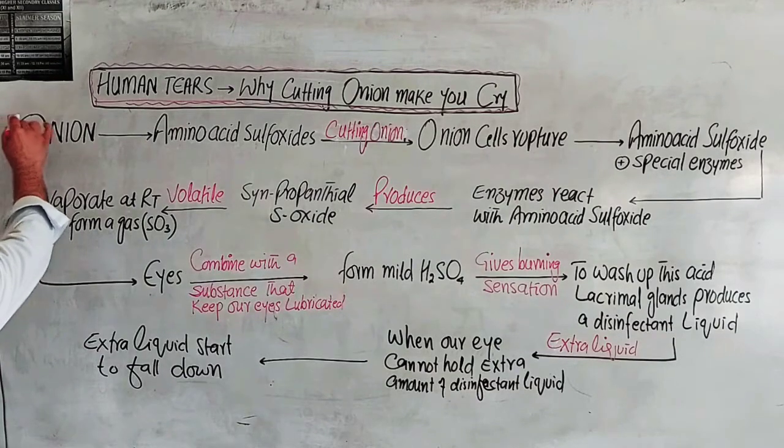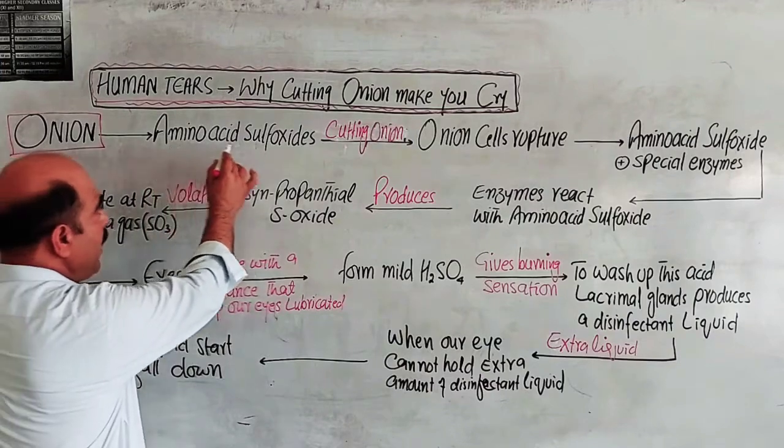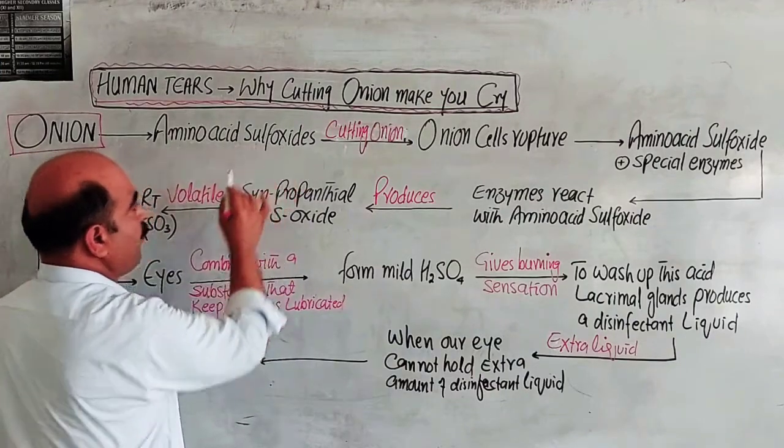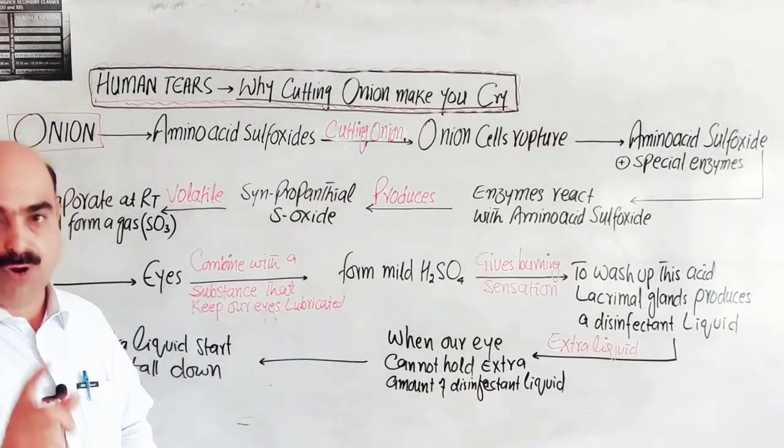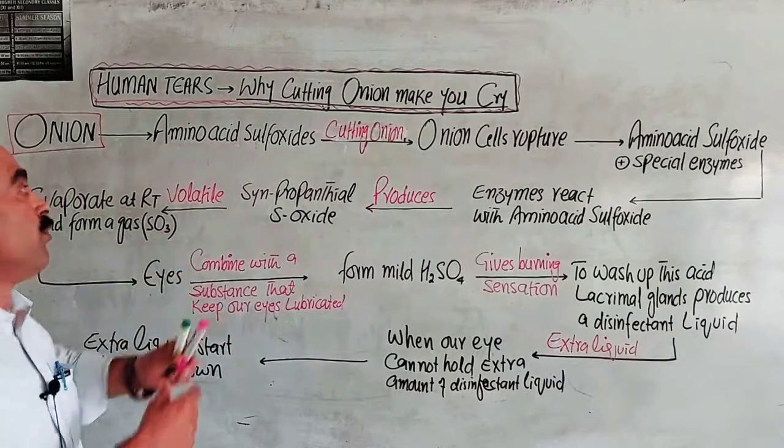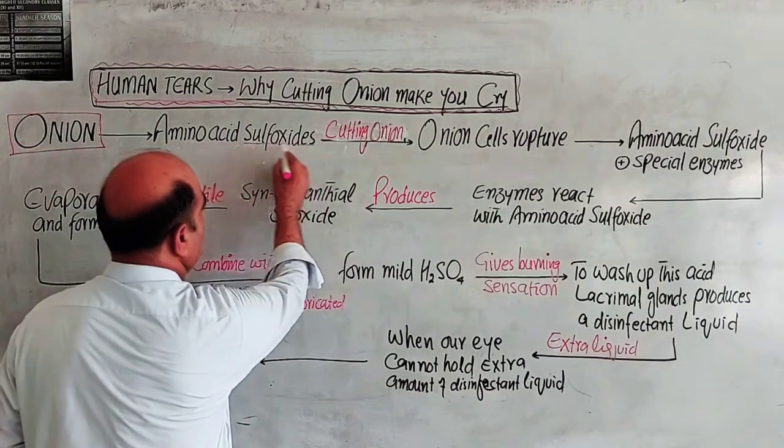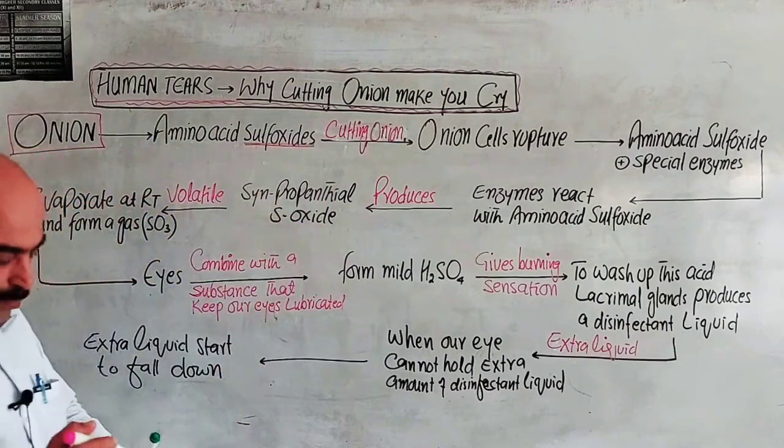Onion contains amino acid sulfoxide. These amino acids are building blocks of protein. These amino acid sulfoxides are chemical compounds present in the onion.